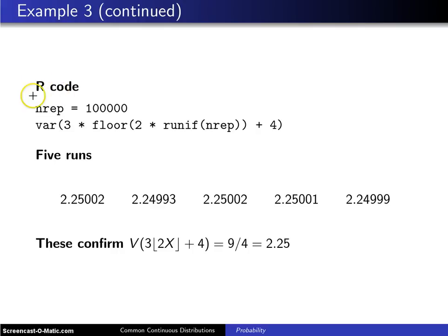So here is some R code that does Monte Carlo simulation. The number of replications is set to 100,000. This R unif right here is going to generate the uniform 0 ones.